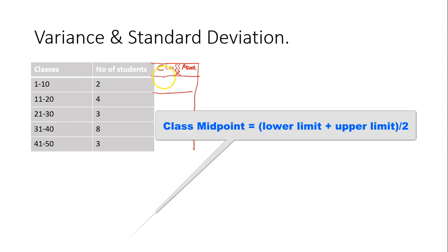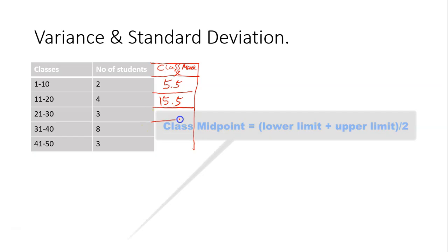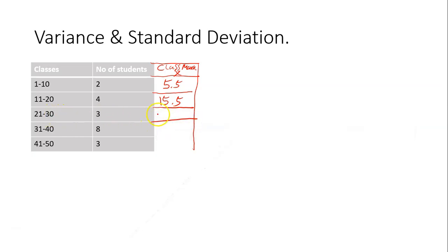For the first class: 1 plus 10 divided by 2, you get 5.5. For the next class: 11 plus 20 divided by 2, you get 15.5. Next class: 21 plus 30 is 51, divided by 2 is 25.5. Next class: 31 plus 40 is 71, divided by 2 you get 35.5. Then the last class: 41 plus 50 is 91, divided by 2 you get 45.5.